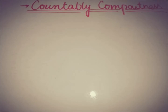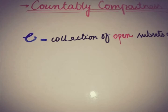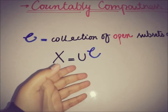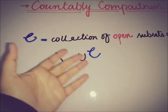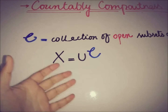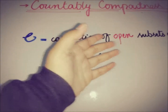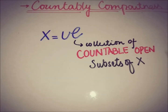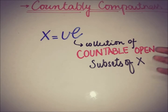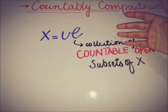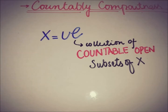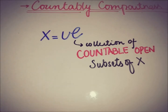Recall the definition of a cover in a topological space. If C is a collection of open subsets of X, and the union of all those open subsets is equal to X, then C is called an open cover of X. Now, if we add the restriction that C contains only countable open subsets of X, and their union is still equal to X, then C is called a countable open cover of X.